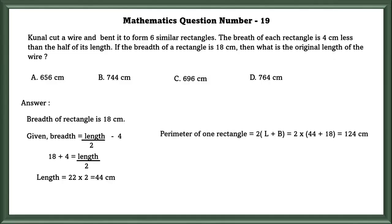Perimeter of one rectangle is equal to 2 into L plus B. If we substitute the values, we will get 124 centimeters. So, perimeter of 6 rectangles is equal to 124 centimeters into 6, that is equal to 744 centimeters.